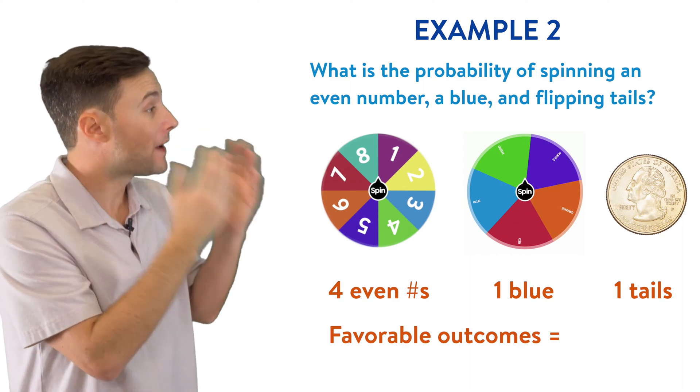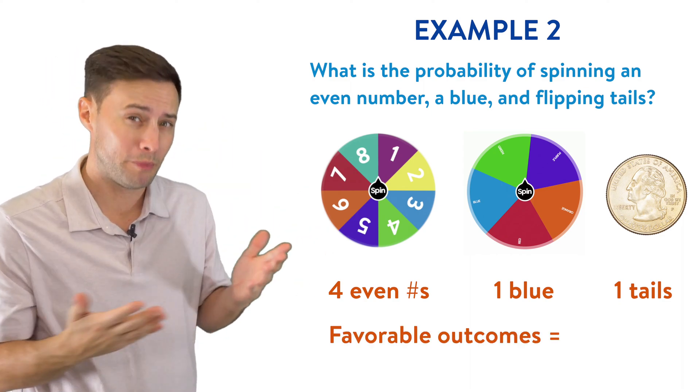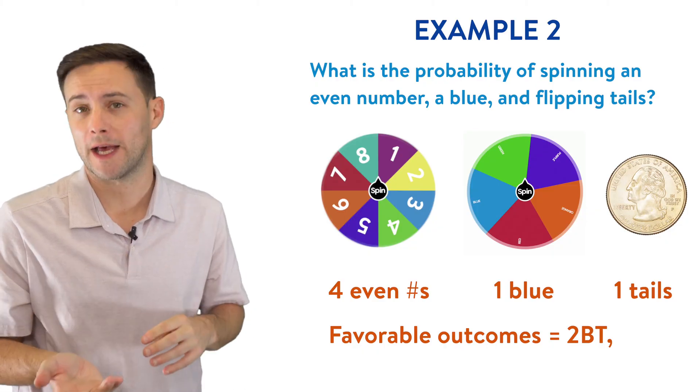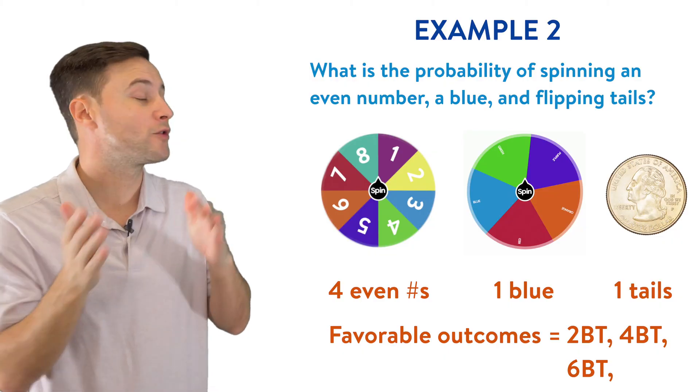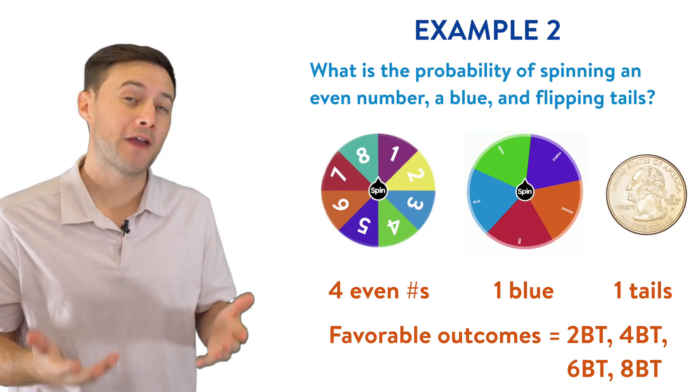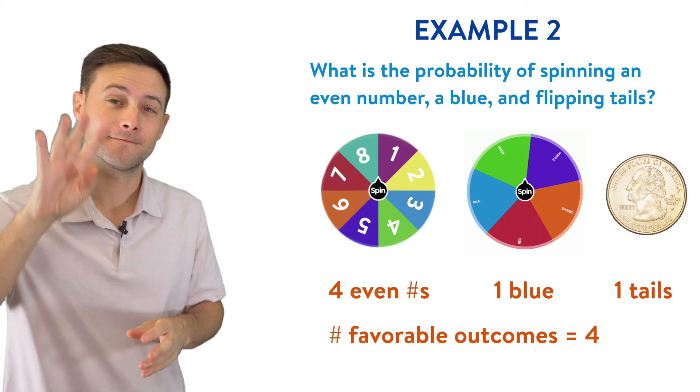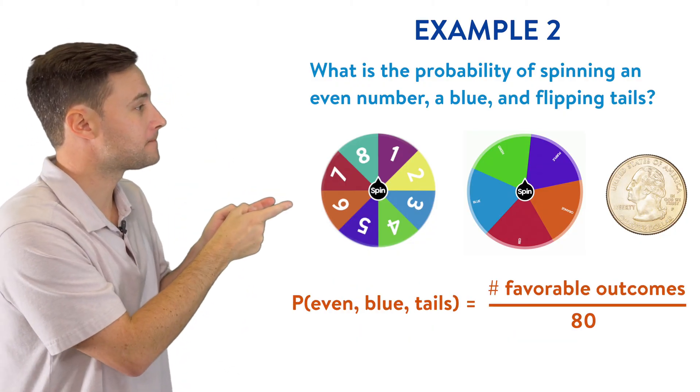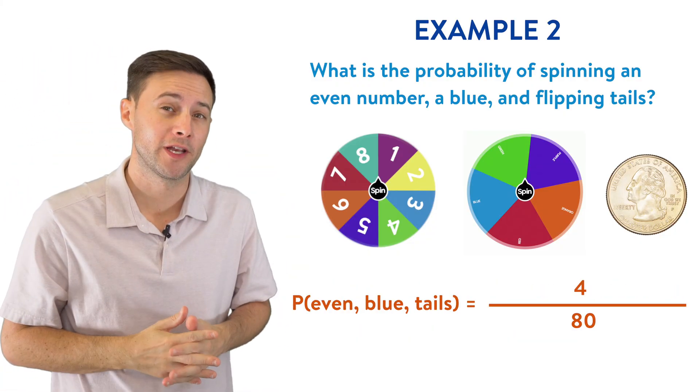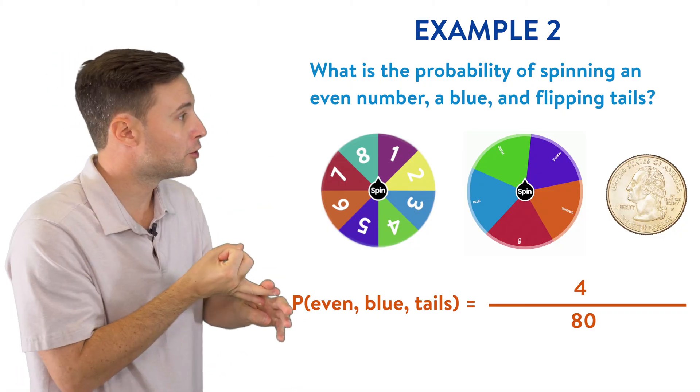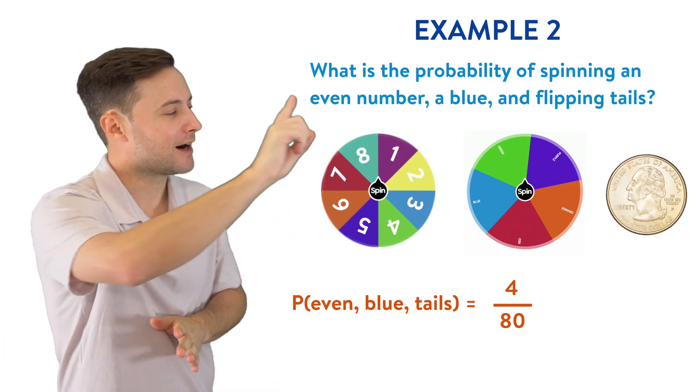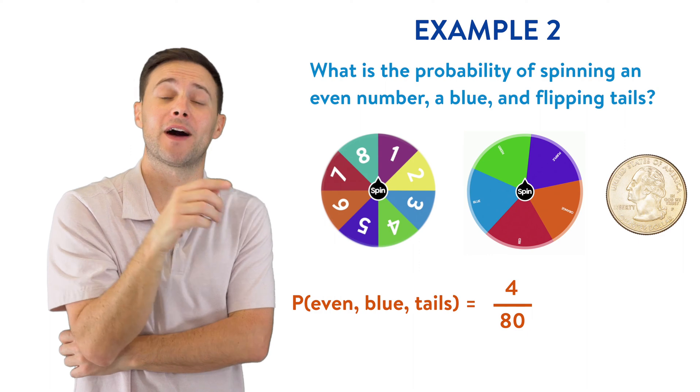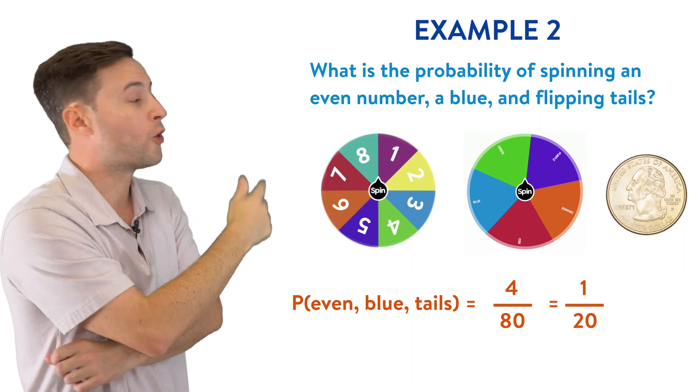So our favorable outcomes then would be a two blue tail, four blue tails, six blue tails, or eight blue tails. So how many favorable outcomes are there? Four. That goes in our numerator. So the probability of an even number, a blue, and a tails is going to be four out of 80. But obviously, we can simplify that. That's going to simplify to 1/20th or 5%. Here's one more to try on your own.